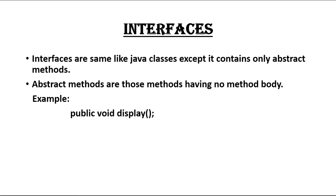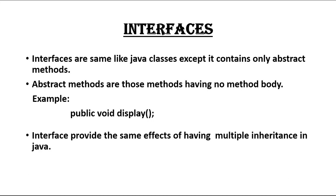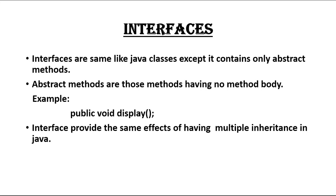Here is an example of an abstract method. You can see that a method named 'display' is present here. You can also see that the method is ending with a semicolon — that means it is considered as a statement in Java. There is no method body. Such methods are called abstract methods in Java.